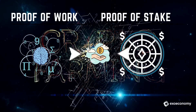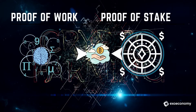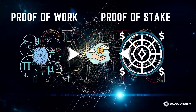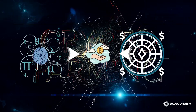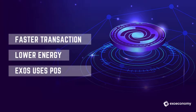Proof-of-stake, on the other hand, goes by a more traditional approach that requires users to stake a certain amount of their cryptocurrency. Proof-of-stake mining allows for quicker transactions and lower energy consumption than proof-of-work. Exos blockchain uses proof-of-stake as its consensus algorithm.